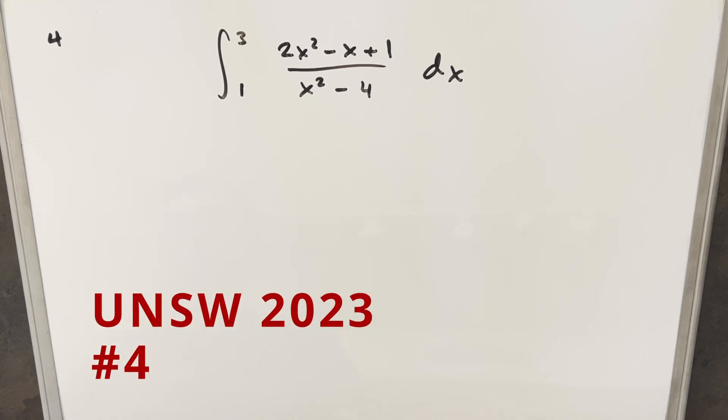Okay, we have here another integral. This one's from the UNSW Integration B from 2023, problem number four. We have the integral from one to three of two x squared minus x plus one over x squared minus four dx.